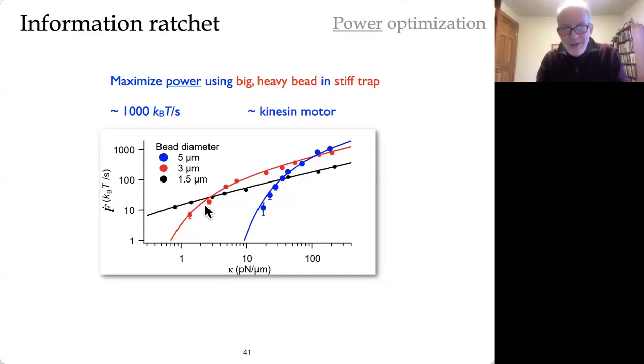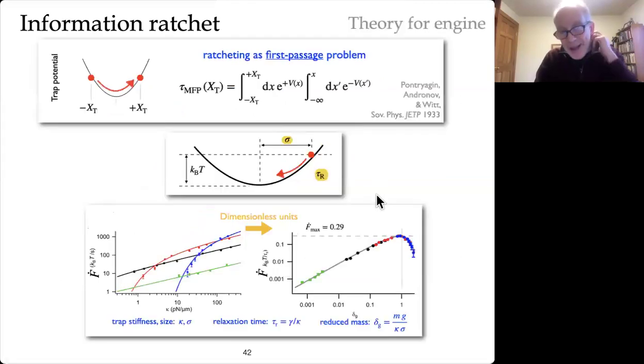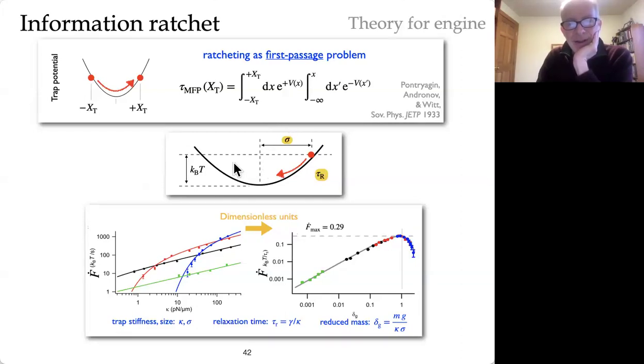Okay. So there are things like that. And you can study it under different conditions. This is how far goes up with different bead sizes, with different trap stiffnesses, looks a little bit of a mess. There's a nice theory that Yannick and Joseph Lucero worked out, based on first passage times, where you're going from the negative, the original reset position down to the next threshold.